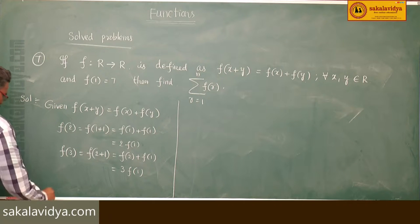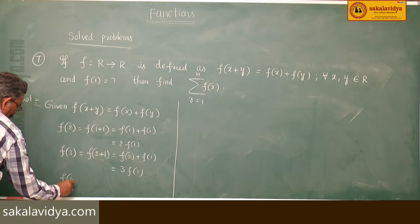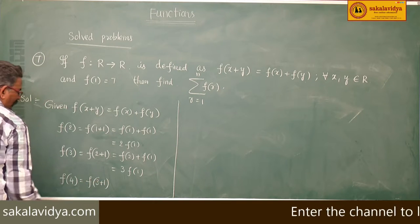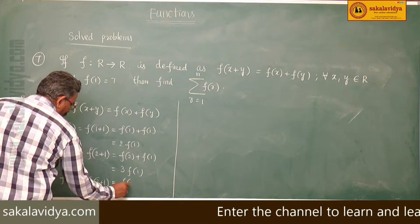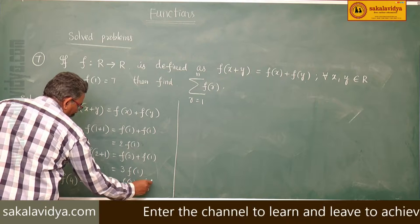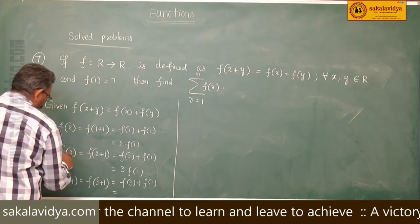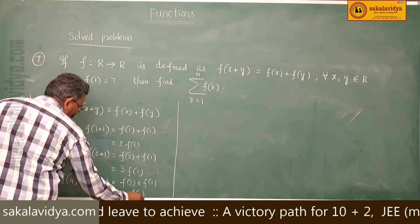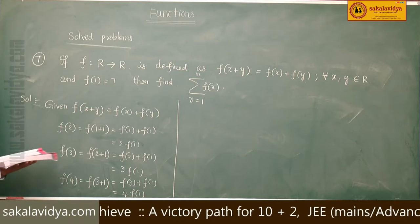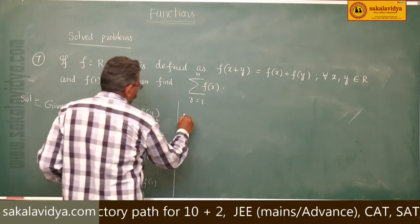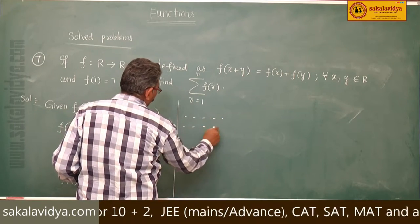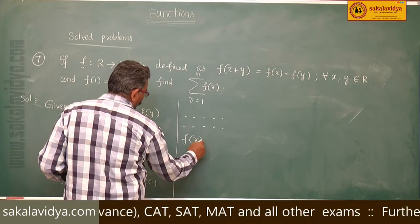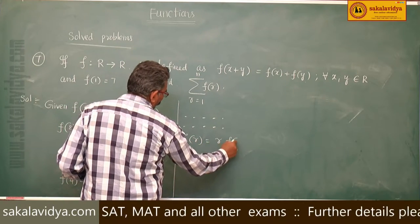So f of 4 equals f of 3 plus 1, which equals f of 3 plus f of 1. Since f of 3 is 3 f of 1, this becomes 4 f of 1. By observing this pattern, we can write f of r is equal to r times f of 1.